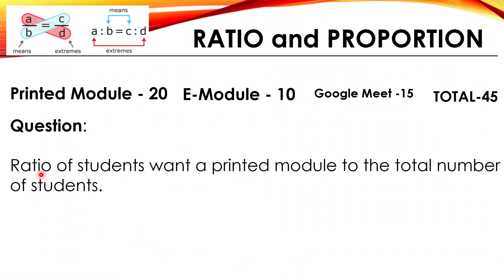Ratio of students want a printed module to the total number of students. So we'll make the ratio. Printed module, that is 20 is to the total 45. We can simplify, divisible by 5. 20 divided by 5 is 4, 45 divided by 5 is 9. So the ratio is 4 is to 9.